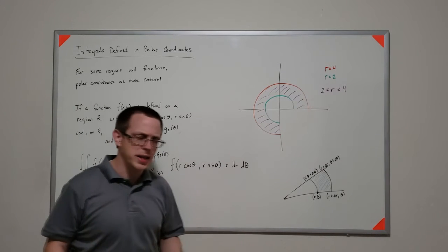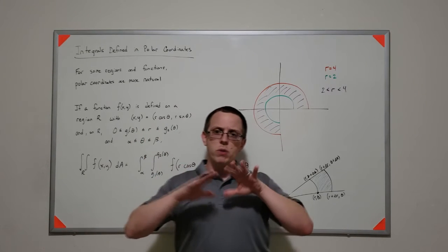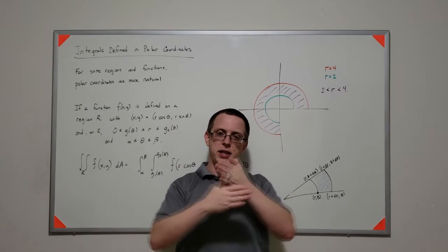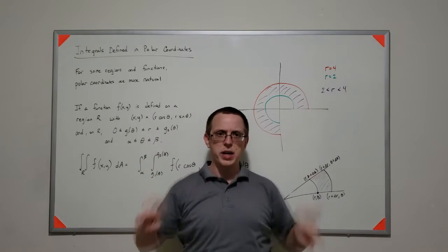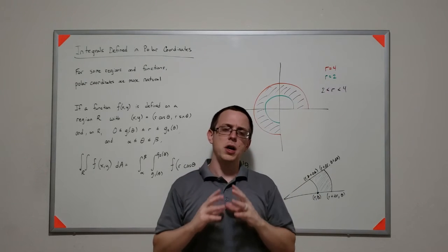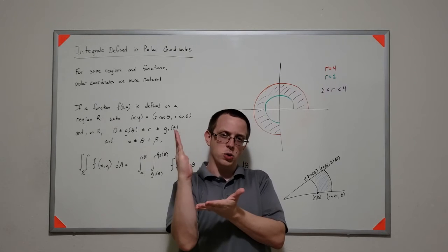And you might ask yourself, why is that? Well, that comes from the fact that when we were normally setting up the definition of a double integral, we had these differential areas. We gridded out the whole space, and we had these differential area blocks, but the problem is when you partition out in terms of this angle space.